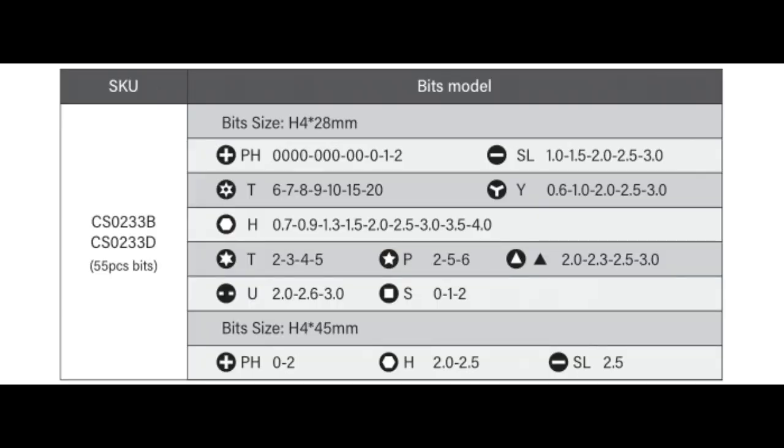And here is the chart with all of the bits. You can see that you get Phillips, slotted, torques, that's a security torques. You get the Y, or triangular-shaped one, hex, torques, that is non-security. The P is a star shape, which is called pentalobe. They give you a triangular bit. They call the other one U. I'm not sure exactly what that stands for, but it basically is a snake-eyes kind of looking thing. And square bits as well. And you can also see the appropriate different sizes that they give you.